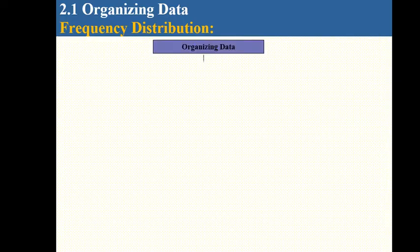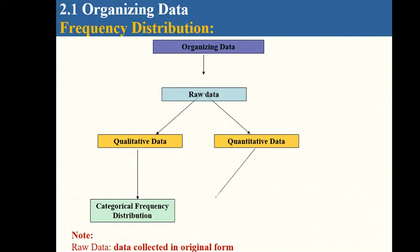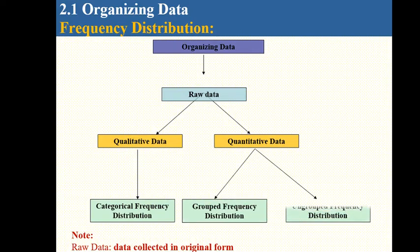Now we'll look at the types of frequency distribution. When organizing data, we start with raw data. If it is qualitative data, we use categorical frequency distribution. If it's quantitative data, we use grouped or ungrouped frequency distribution.